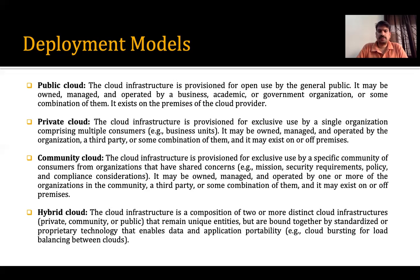The second model is the private cloud. The cloud infrastructure is provisioned for exclusive use by a single organization comprising multiple consumers or business units. It may be owned, managed, and operated by the organization, a third party, or some combination of them, and may exist on or off premises. For example, if I am a software firm and I want cloud infrastructure for my company only — so that only my employees can use it — then the private cloud model is for me.